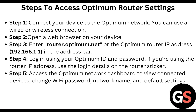The first step to access the Optimum router settings: connect your device to the Optimum network. You can use a wired or wireless connection, whatever you want. Then open the browser on your device.